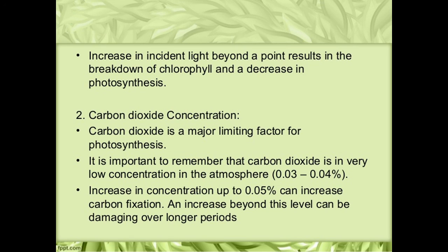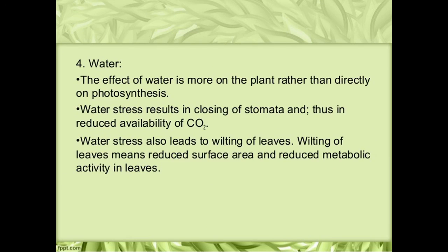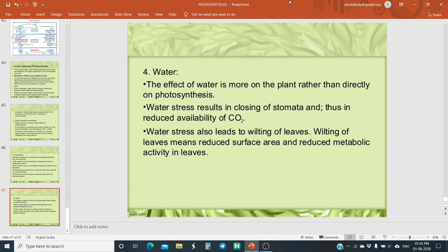Even the normal oxygen concentration of 21 percent in the atmosphere inhibits photosynthesis in C3 plants. But in C4 plants, oxygen concentration does not affect photosynthesis since photorespiration is absent. Water is one of the raw materials required for photosynthesis; however the amount needed is very small, so water can hardly be a limiting factor. The effect of water is indirect — a water deficiency may cause closure of stomata, decreasing absorption of carbon dioxide. Water deficit leads to decrease in turgor pressure and dehydration of protoplasm, which will affect photosynthesis. This is about our photosynthesis. Thank you very much, hope you understood all the topics.